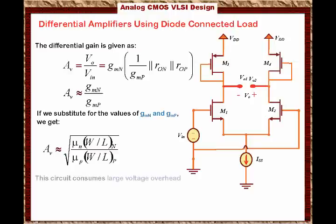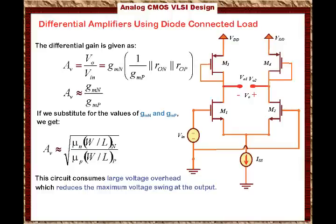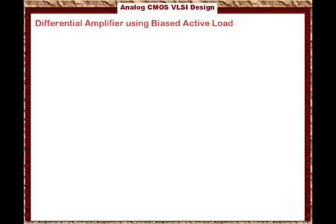However, this circuit consumes large overhead voltage, which reduces the maximum voltage swing at the output, because the bias voltage is a function of the W/L ratio and the gain is also a function of the W/L ratio. So we cannot simultaneously achieve a very good gain and a very good output voltage swing — it requires a very large overhead voltage. Instead of diode-connected transistors, a more commonly used technique is the differential amplifier using a biased active load.